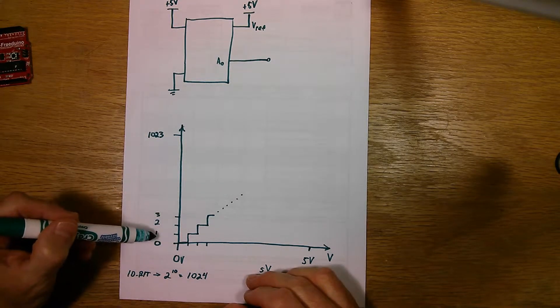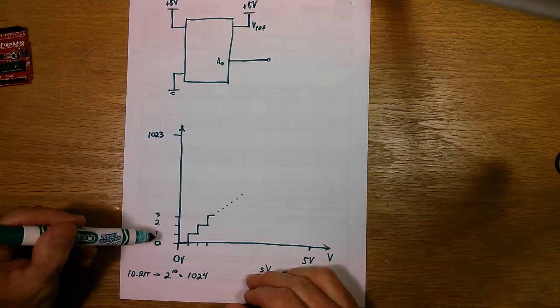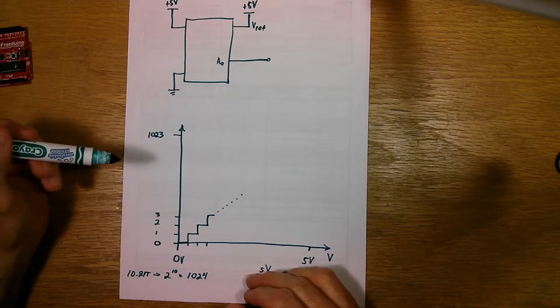So you can't get a number that's 1.5, for example, or 3.5 or whatever. It's either 0, 1, 2, 3, all the way up to 1023.